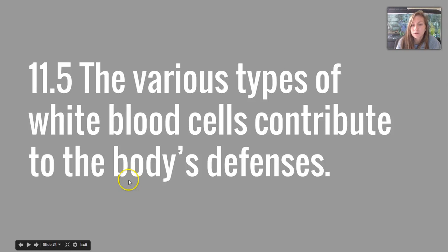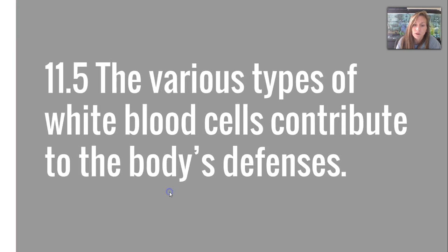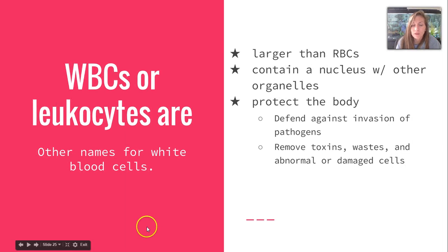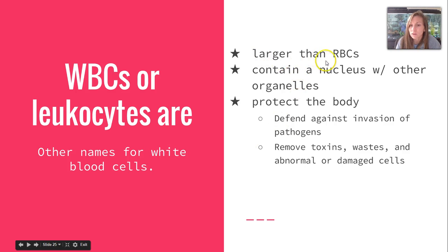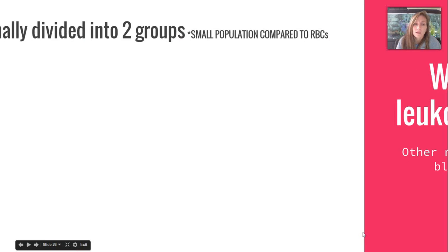Hey guys, Carlson back to finish up chapter 11 starting with section 5, which talks about the various types of white blood cells that contribute to our body's defenses. Other names for white blood cells include the abbreviation WBCs or the more scientific term leukocytes. They are larger than red blood cells, contain a nucleus with other organelles, and protect the body by defending against invasion of pathogens and by removing toxins, waste, and abnormal or damaged cells.